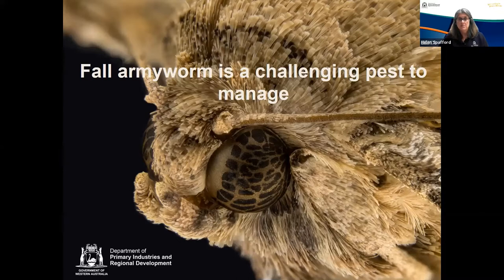As the other presenters have discussed, the reason fall armyworm is so difficult to manage is because it has so many elements of its natural biology that support its success. In its management, we need to target as many aspects of its biology as we can to reduce the population. There is not going to be a silver bullet — any one tool that solves the fall armyworm problem. We need to develop new and innovative approaches that work together.